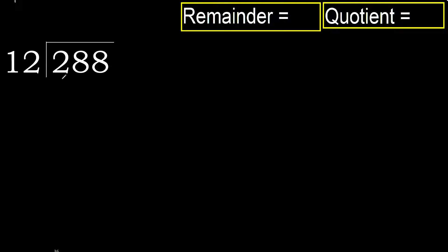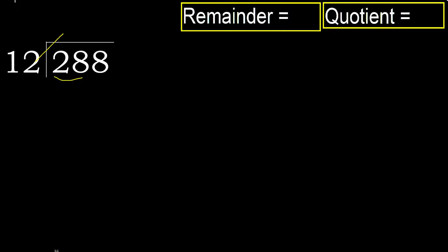288 divided by 12. 2 is less, therefore next. 28 is not less, therefore with 28 — 12 multiplied by which number is nearest to 28 but not greater?